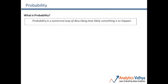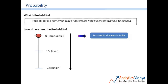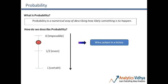How do we describe this probability? As I said, probability is a number and it has a lower and upper bound. The lower bound is zero, which is the probability of an impossible event. On the counter side, a probability of one means the event is certain and will always happen. For example, the sun rising in the west in India has a probability of zero — obviously it cannot happen.